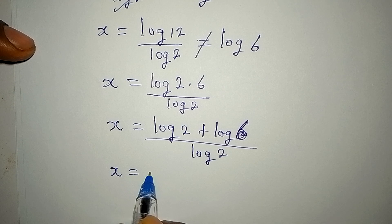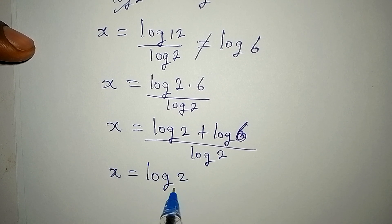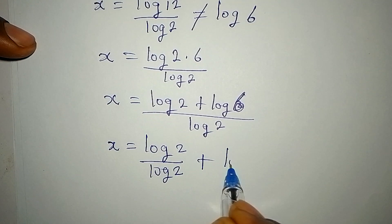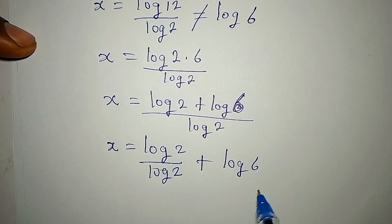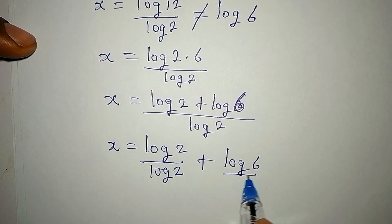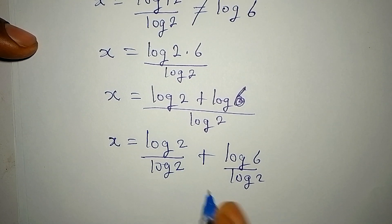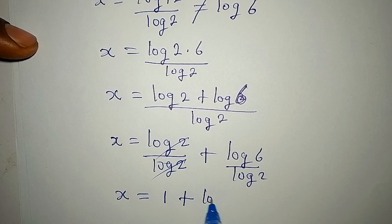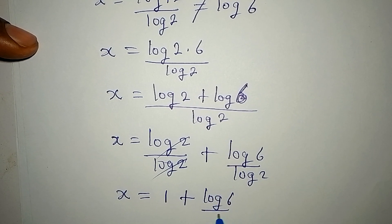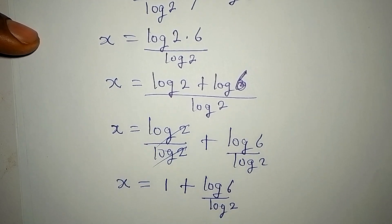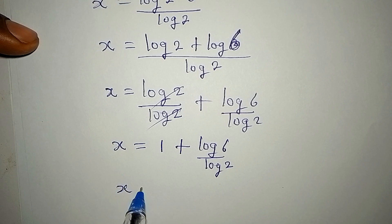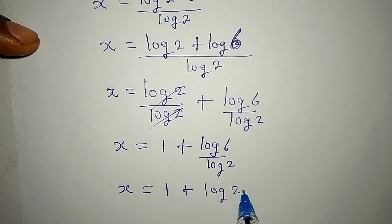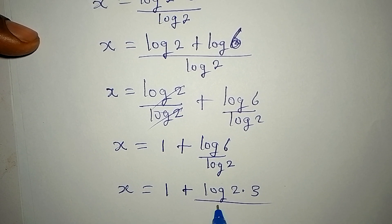Now we can split this, so x will be equal to log 2 over log 2, plus log 6 over log 2. Applying the same thing, log 2 over log 2 gives 1, so we get x equals 1 plus log 6 over log 2.